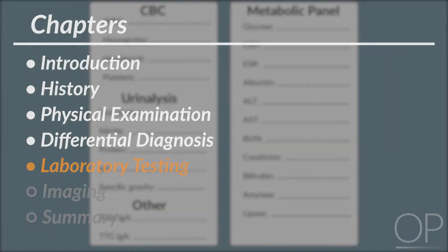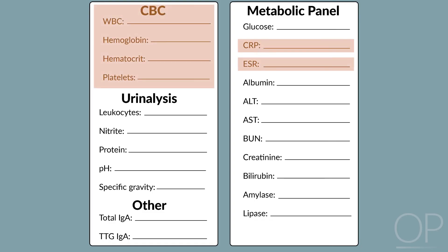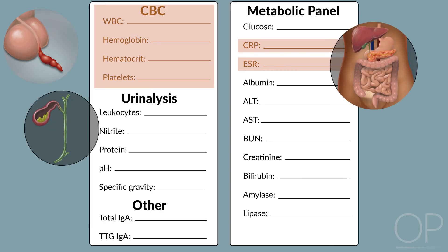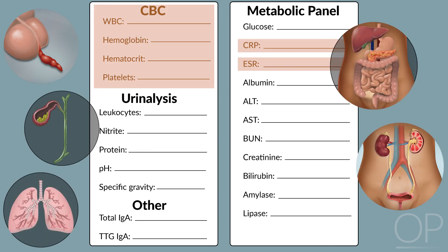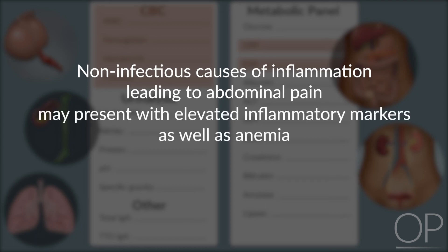Laboratory data is rarely diagnostic without red flag symptoms. Complete blood count, erythrocyte sedimentation rate, and C-reactive protein establish evidence of systemic inflammation, which supports infectious diagnoses like appendicitis, pancreatitis, cholecystitis, pyelonephritis, and pneumonia. In addition, non-infectious causes of inflammation leading to abdominal pain, like Crohn's disease and ulcerative colitis, may present with elevated inflammatory markers as well as anemia.